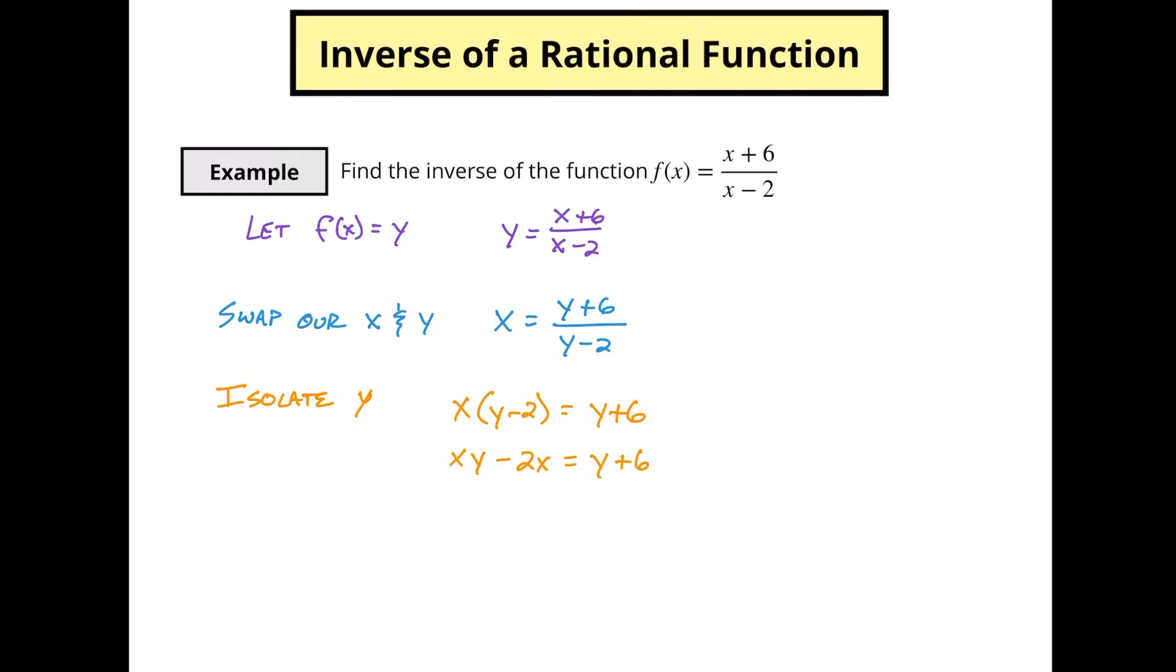So I subtract y, so minus y, and I'm going to add 2x. Now we can see that we've got y distributed over these two terms. So now we can factor y out and we're left with x minus 1, and we've got 2x plus 6.